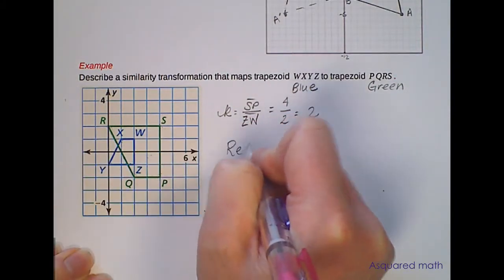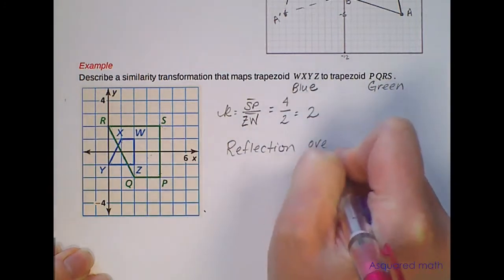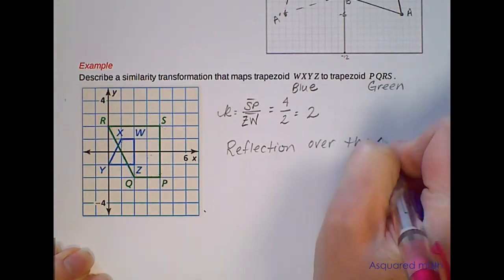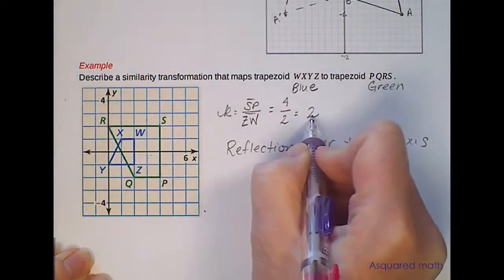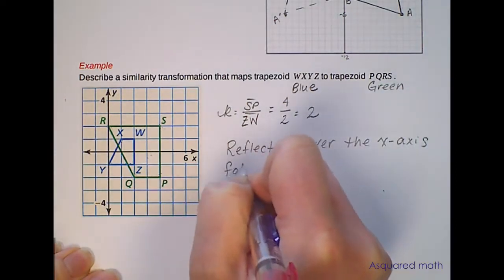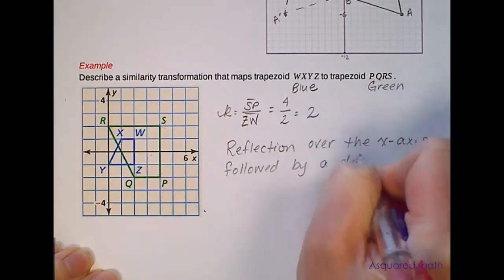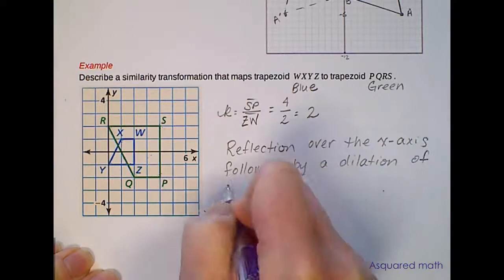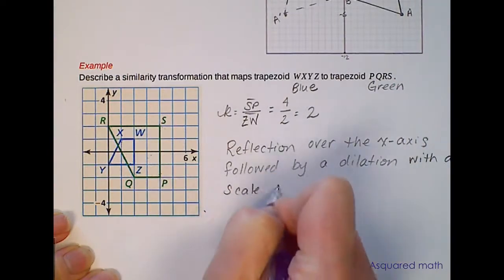So let's go ahead and state that we have a reflection over the x-axis and we already calculated that we had a dilation. So after the reflection of the x-axis we have that followed by a dilation with a scale factor of 2.